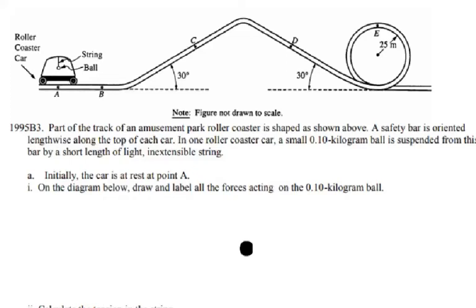This AP question is from 1995 AP Physics B, and the topics covered in this question are the ones taught in AP Physics 1 now. In this problem, part of the track of an amusement park roller coaster is shaped as shown. A safety bar is oriented lengthwise along the top of each car. In one roller coaster car, a small 0.1 kilogram ball is suspended from this bar by a short length of light, inextensible string.